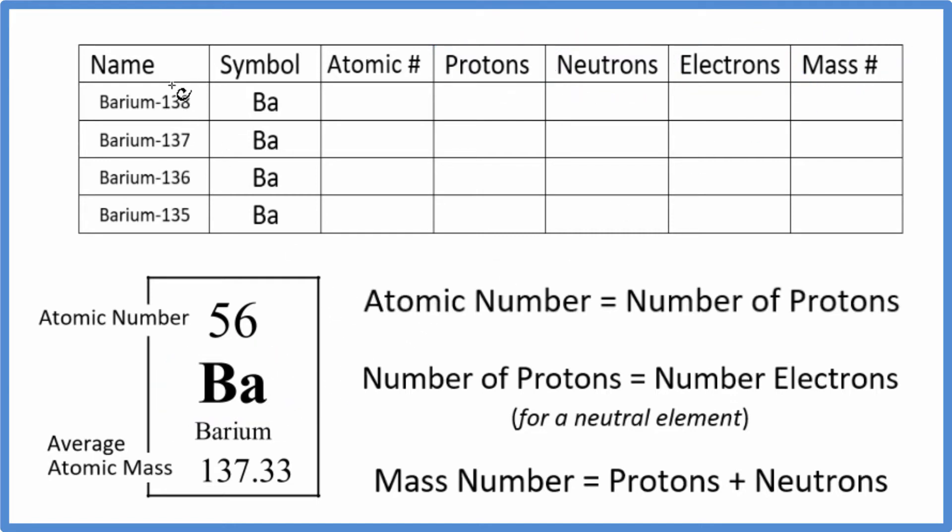So for barium there are a number of isotopes. These are the four major isotopes we're going to deal with. The only thing that's different about these is the number of neutrons here and the mass number. But we'll talk about that a little bit later.